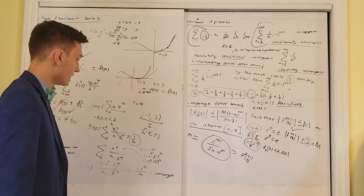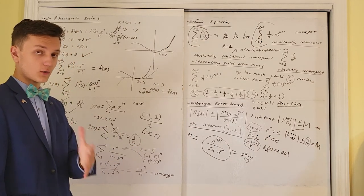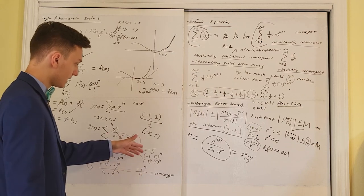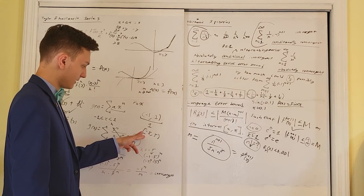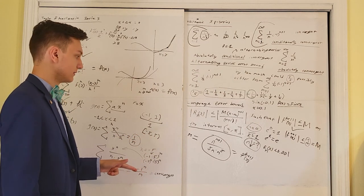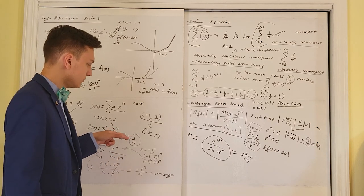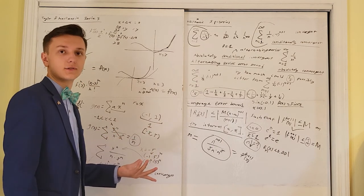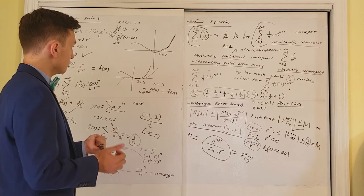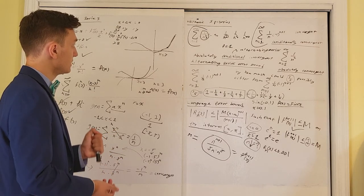Now, for the lower bound: what about x = negative 5? That can be broken up into (−1 × 5)^n, distributing the exponent as (−1)^n × 5^n. Substituting back in: (−1)^n × 5^n over n × 5^n — the 5^n terms cancel — leaving (−1)^n over n, which is the alternating harmonic series, which does converge. So we can put a hard bracket on the negative 5. The interval of convergence is [−5, 5). In a question like this, they would not ask for a radius of convergence because the radius is different on both ends — they would ask you to state the interval of convergence.